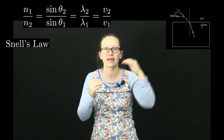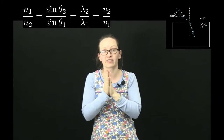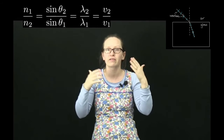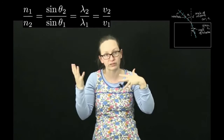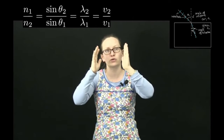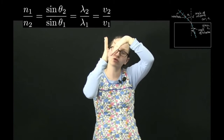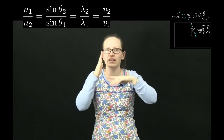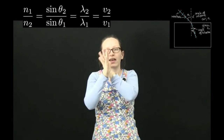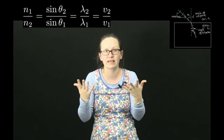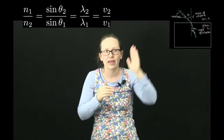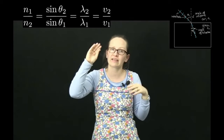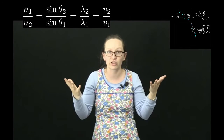We have a very useful quantitative equation that describes the relationship between all these properties. It's called Snell's law and can be written as n1 over n2, referring to the refractive indices, is equal to sin θ2 over sin θ1. θ1 and θ2 refer to the angle of incidence and the angle of refraction, both measured from the normal to the surface. Snell's law also extends to: n1/n2 = sin θ2/sin θ1 = λ2/λ1 = v2/v1.